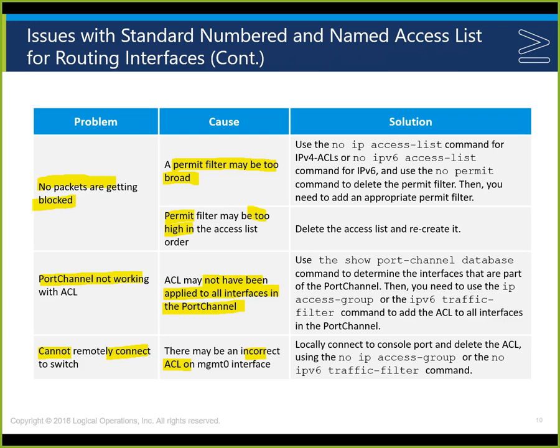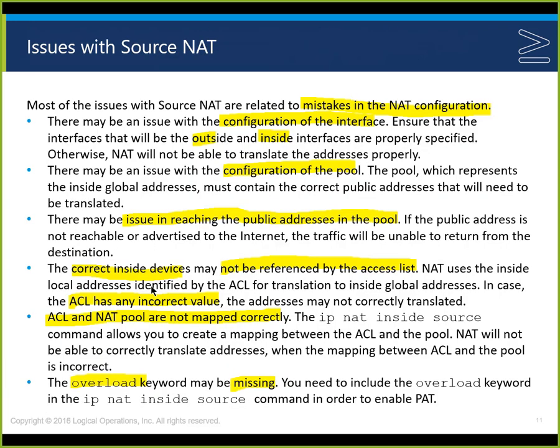If you cannot remotely connect to the switch, there may be an incorrect access control list on the management interface — VLAN 1. Locally connect to the console port and delete the access control list. With Telnet and SSH, you can use an access control list on the VTY line or SSH line depending on transport protocol. Use 'no ip access-group' or 'no ipv6 traffic-filter' to remove it. Check whether an access control list applied to the interface is preventing connectivity.